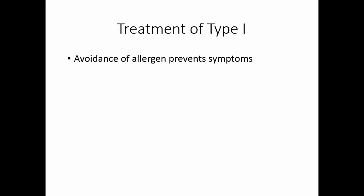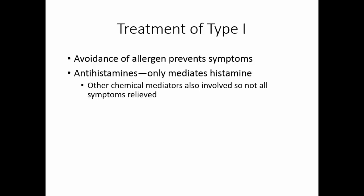The first treatment is simply to try to avoid the allergen. This will prevent the symptoms from developing. If symptoms develop, antihistamines can be used. While histamine is the major mediator of inflammation, other chemical mediators are also involved. So antihistamine will take care of the majority of the symptoms, but will not relieve all of the symptoms. Asthmatics really can't take antihistamines. Glucocorticoids are a little better choice for them.